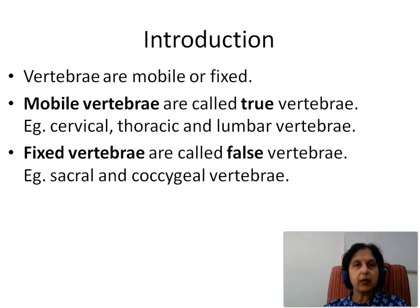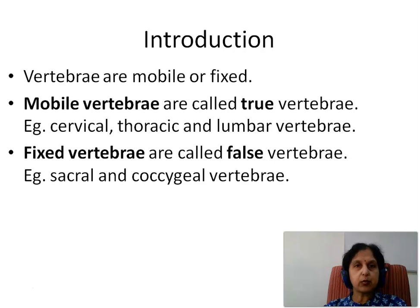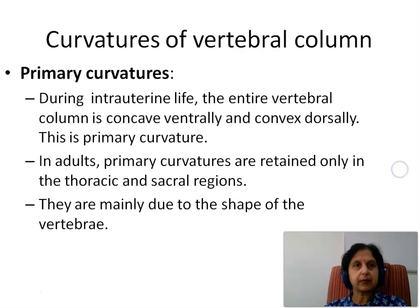Vertebrae are either mobile or fixed. Mobile vertebrae are called true vertebrae, examples being the cervical, thoracic and lumbar vertebrae. Fixed vertebrae are called false vertebrae, and examples are the sacral and the coccygeal vertebrae.